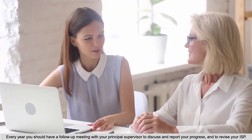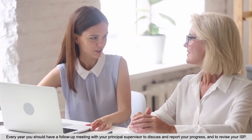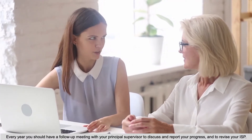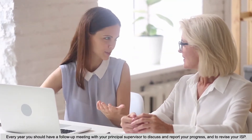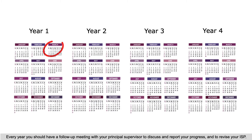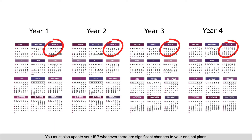Every year you should have a follow-up meeting with your Principal Supervisor to discuss and report your progress and to revise your Individual Study Plan if necessary. You must also update your Individual Study Plan whenever there are significant changes to your original plans.